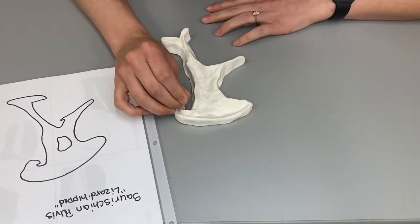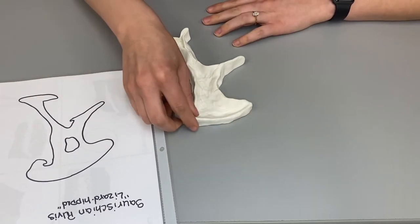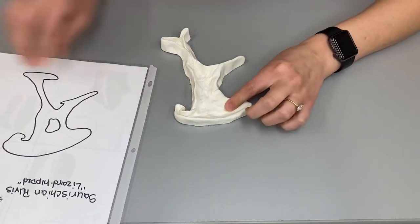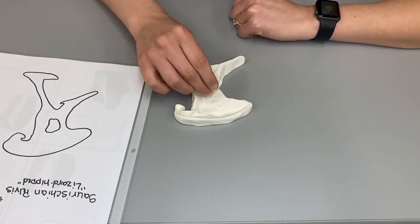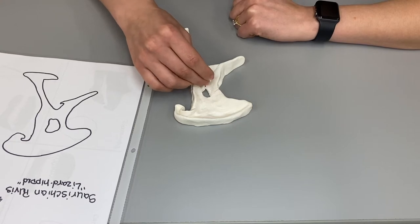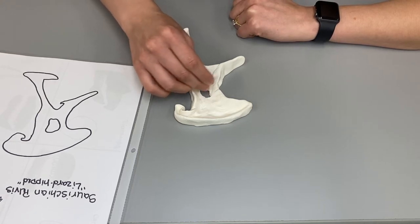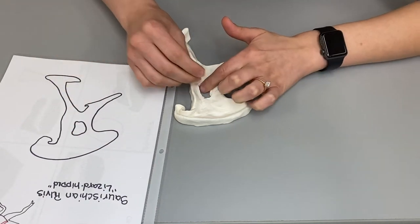You can go ahead and grab the toothpick and use it to help shape all the different curves that can be found with this bone. Go ahead and grab your toothpick again and use it to start forming the hole in the center of the bone that you see.